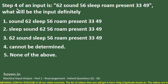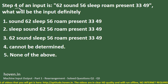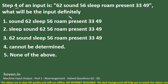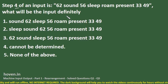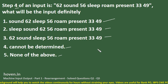This is the first question. Step 4 of an input is: 62, sound, 56, sleep, room, present, 33, 49. He says this is step 4 of some input, and asks: what will definitely be the input — the starting point? The options are various arrangements, cannot be determined, or none of the above.